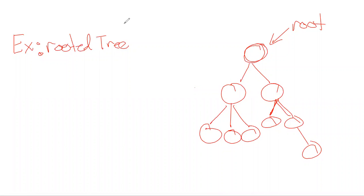We'll introduce the idea of parent nodes and child nodes. Note that although we've defined a tree as an undirected graph, once we identify the root our tree has orientation. Our edges can be seen as going away from the root or toward the root — they're either one or the other. By standard, most consider the edges to go away from the root. We use this concept to define parent nodes and child nodes.